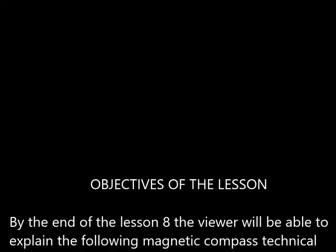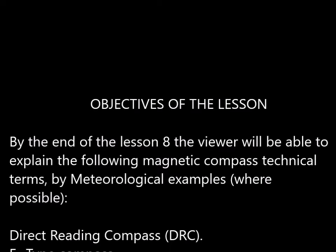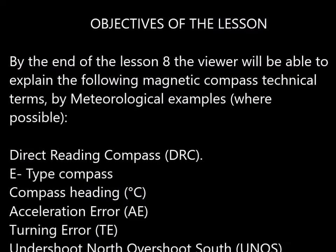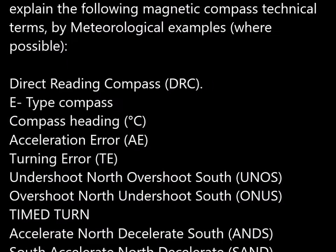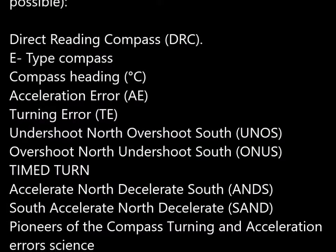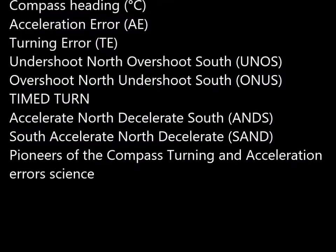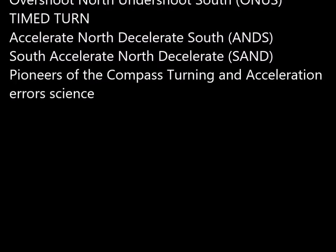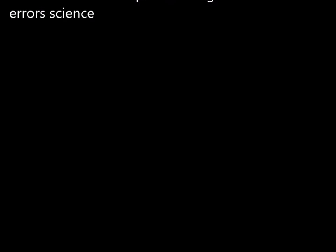Objectives of lesson 8: by the end of this lesson, the viewer will be able to explain the following magnetic compass technical terms: direct reading compass, E-type compass, compass heading, acceleration error (AE), turning error (TE), undershoot north/overshoot south (UNOS), overshoot north/undershoot south (ONUS), timed turn, accelerate north/decelerate south, and the pioneers of compass turning and acceleration errors science.